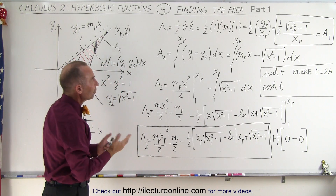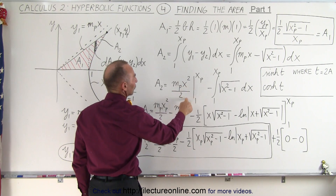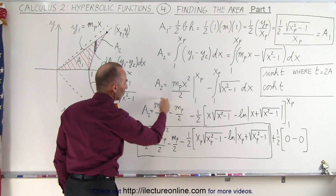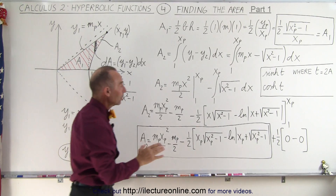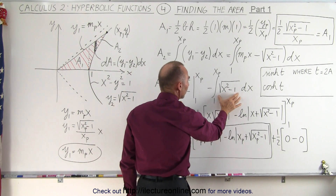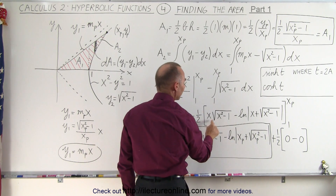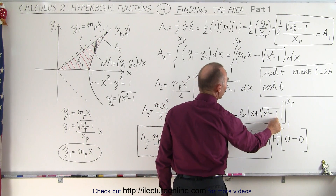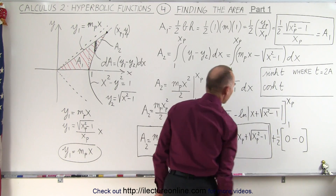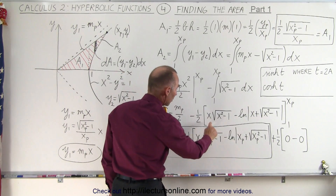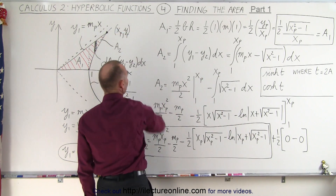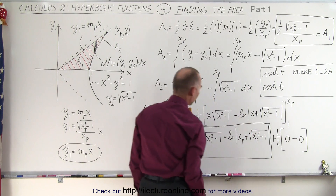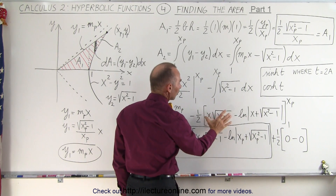Now we're ready to integrate. The first integral is easy — that's simply m sub p times x squared over 2, evaluated from 1 to x sub p, and we plug in the upper and lower limits. To integrate the second integral, which is a little bit harder, the result is one half times x times the square root of x squared minus 1, minus the natural log of x plus the square root of x squared minus 1, evaluated from 1 to x sub p. When we plug in the upper limit, we replace every x by x sub p. When we plug in the lower limit, we get 1 minus 1, which is 0, so that term goes away.